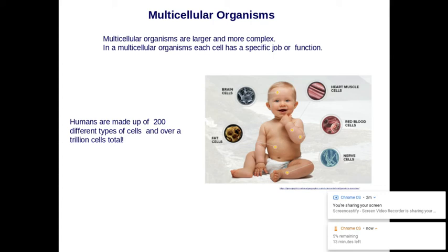Multicellular organisms are larger and more complex. In a multicellular organism, each cell has a specific job. Obviously the brain cell's job is different than the heart muscle cell, which is different than a red blood cell. Depending on its job, its shape is going to look different. So in multicellular organisms, every single cell type has a different shape based on its function. Humans are actually made out of 200 different types of cells, and total we're made of over a trillion cells.